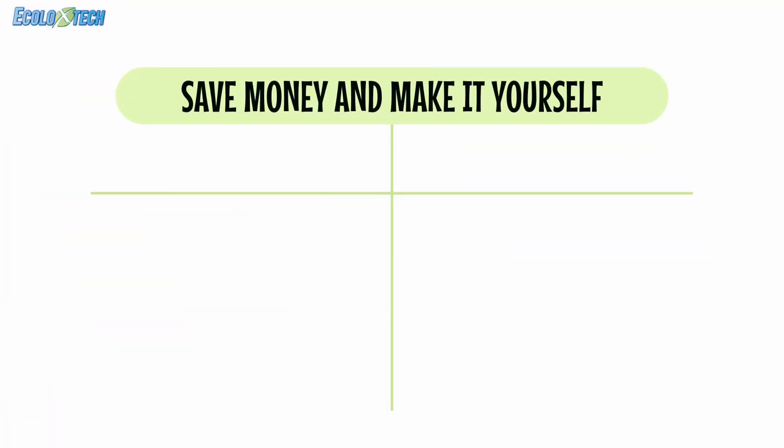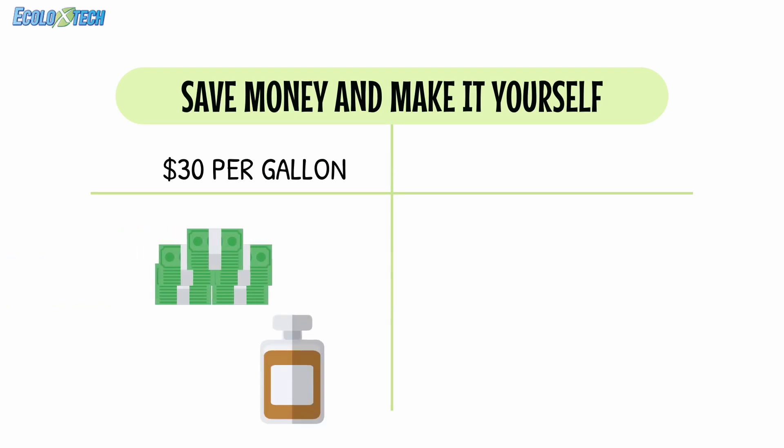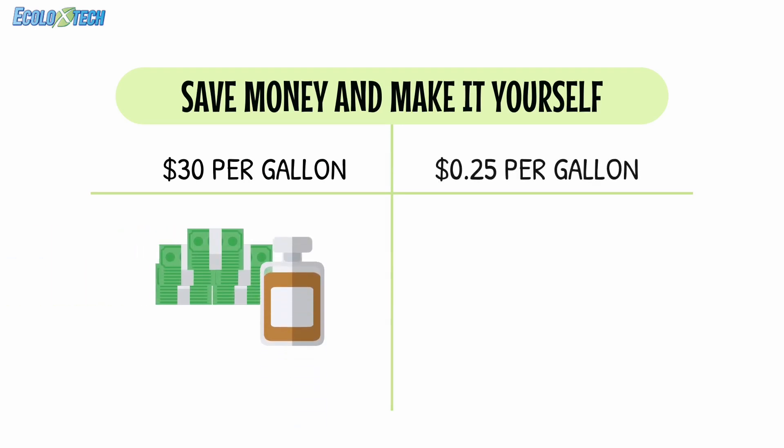You can buy gallons of hypochlorous on the internet, but it's more expensive, and it has a short shelf life of 3 to 12 months, so you've got to use it up quickly. Investing in a hypochlorous acid generator allows your home or business to make gallons for less than a dollar — that's hundreds or even thousands of dollars in savings per year, depending on how much you use. That sounds like a pretty good deal.